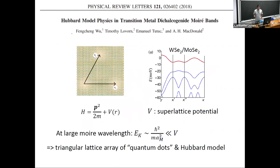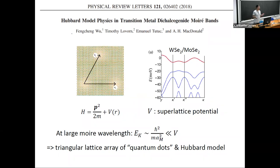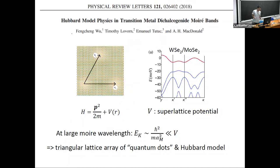The physics of TMDs gets even more interesting when you stack two layers together. When the two layers have a lattice mismatch or a finite twist angle, you introduce a long-wavelength periodic structure called the Moiré superlattice. It was first proposed by Allan MacDonald's group in 2018 that these systems may be an ideal realization of the Hubbard model.